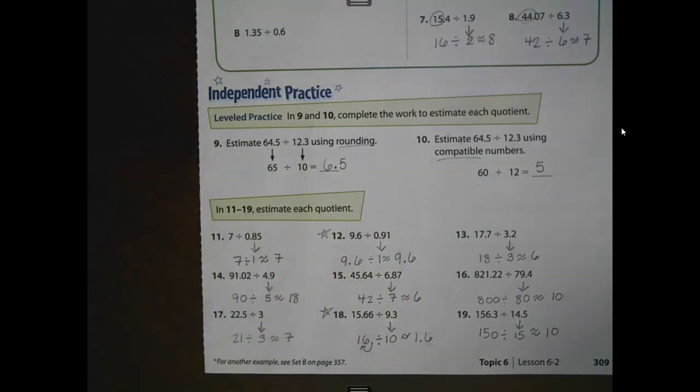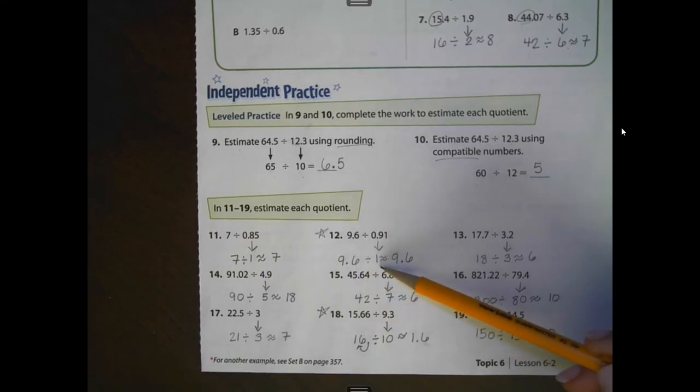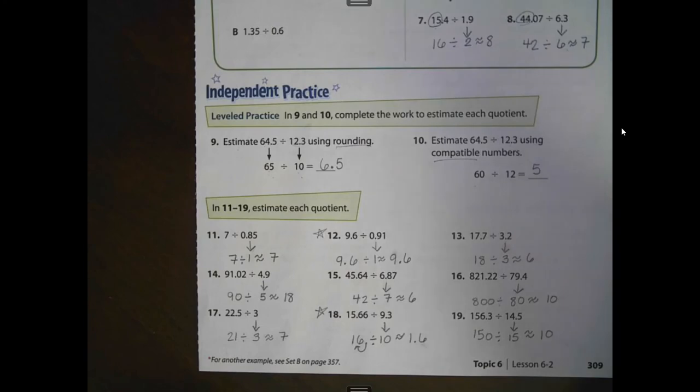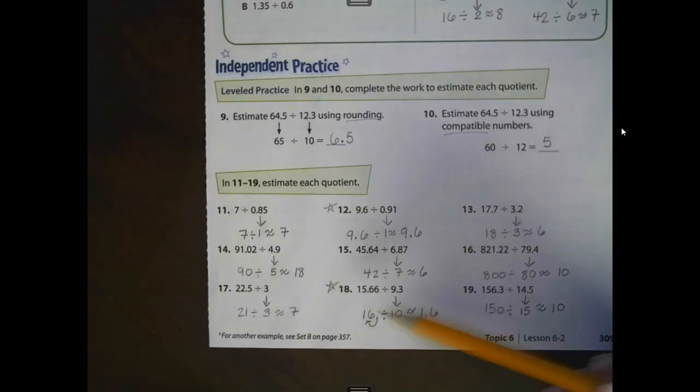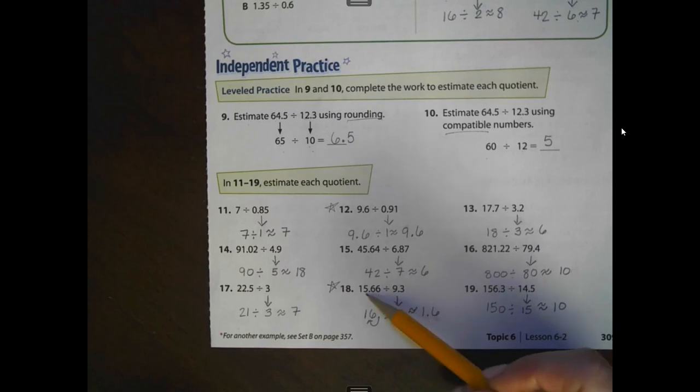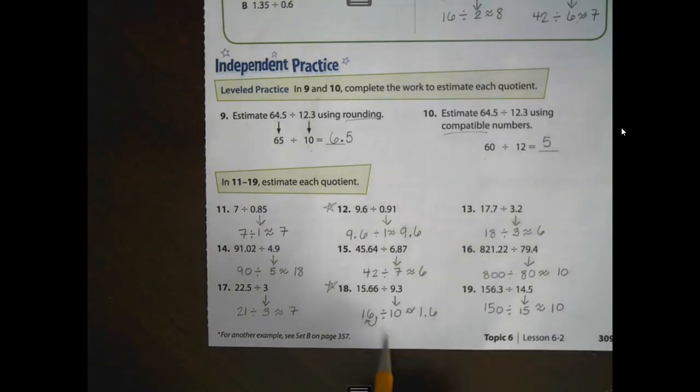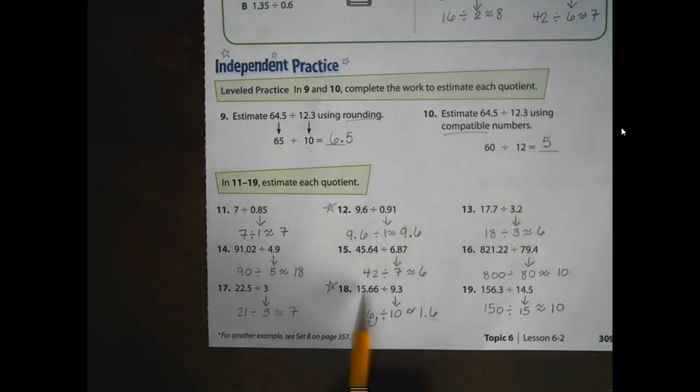Take a look at number 12. I remember a lot of children in class made this 91 hundredths one whole and they made 9 and 6 tenths 10 and they did 10 divided by 1 is 10. But using yesterday's lesson, we could leave 9 and 6 tenths 9 and 6 tenths because if we divide any number by 1, it equals itself. Number 18, the same thing. I had a lot of children last year that rounded 9 and 3 tenths up to 10. Then they used 10 or 20 as their compatible number and they got an estimate of 1 or 2.